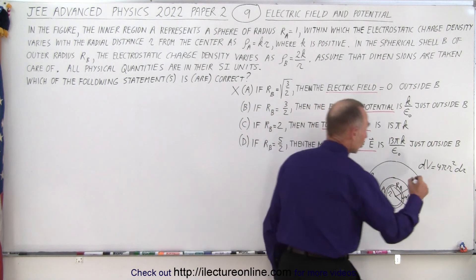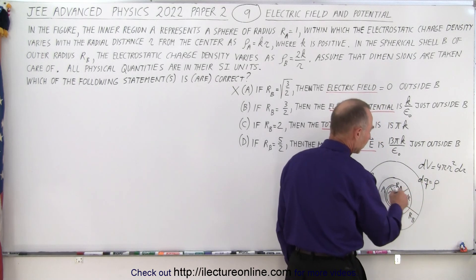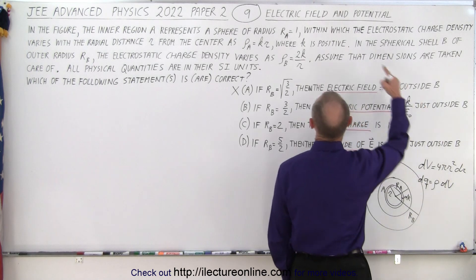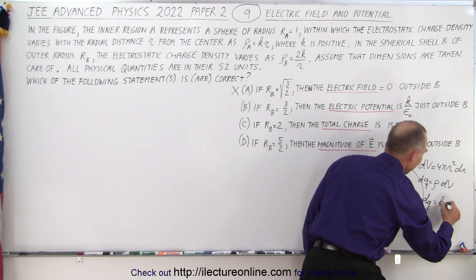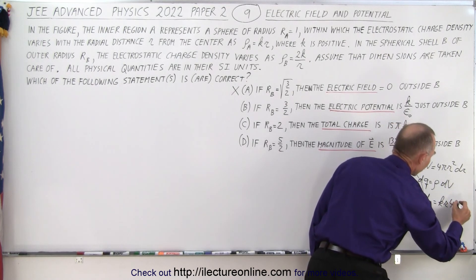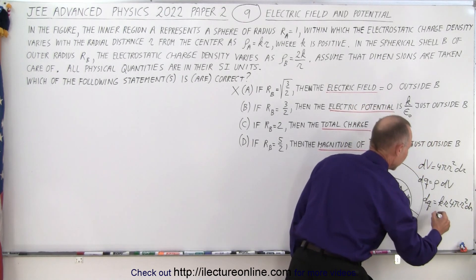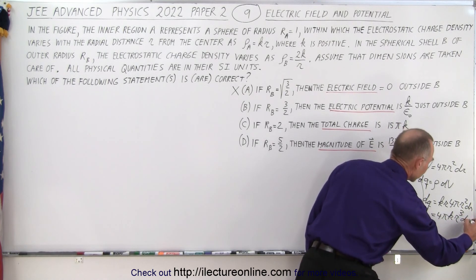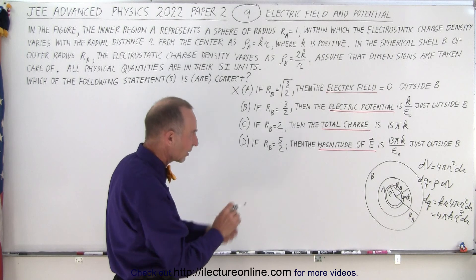And then to find the charge, the charge would be equal to the density times the volume, but in this case the small amount of charge will be equal to the density times dV. And of course the density is k times r, so that would be dQ is equal to k times r times dV, which is 4 pi r squared dr, and so this would be equal to 4 pi k r cubed dR. And so that would be the charge inside a little spherical shell inside A.